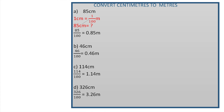Let's move on to the next question. Convert centimetres to metres. Since 1 centimetre is 1 hundredth of a metre, here we need to divide the given number by 100. So the first one: 85 centimetres will be divided by 100 and the answer is 0.85 metres. The next one: 46 centimetres divided by 100 will give us 0.46 metres. The next: 114 centimetres divided by 100 will give 1.14 metres.